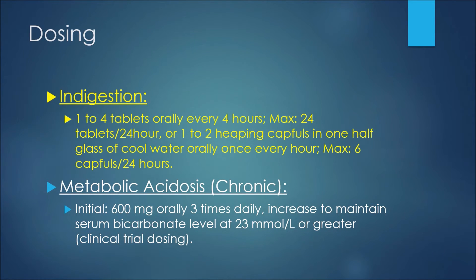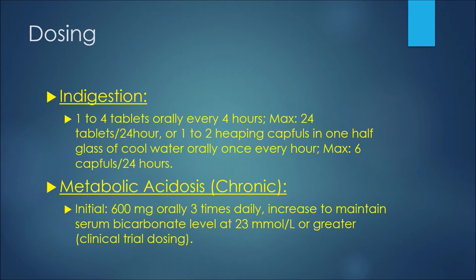When treating metabolic acidosis, if it's chronic, we may see an initial dose of 600 milligrams orally three times daily, and then we may increase to maintain serum bicarbonate levels at 23 millimole per liter or greater. This is clinical trial dosing.